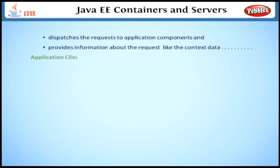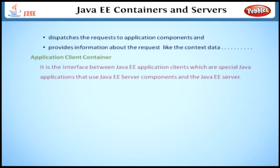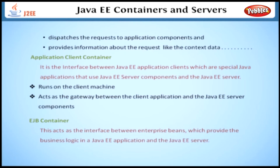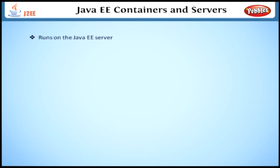Next, the application client container. It is the interface between Java EE application clients, which are special Java applications that use Java EE server components, and the Java EE server. The application client container runs on the client machine and acts as the gateway between the client application and the Java EE server components that the client uses. Next, the EJB container. This acts as the interface between enterprise beans, which provide the business logic in a Java EE application, and the Java EE server. The EJB container runs on the Java EE server and manages the execution of an application's enterprise beans.